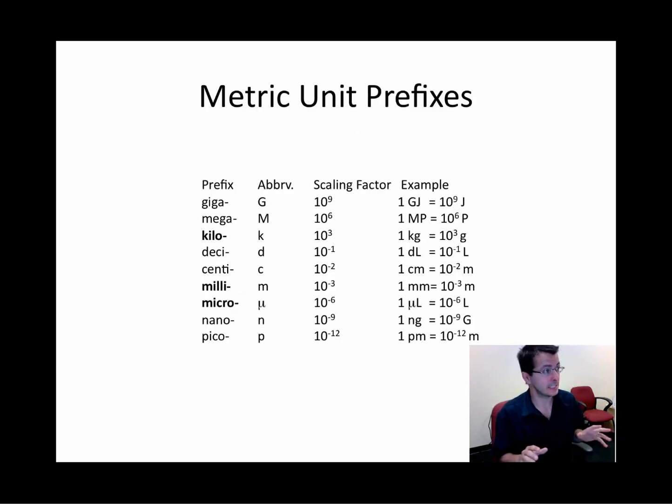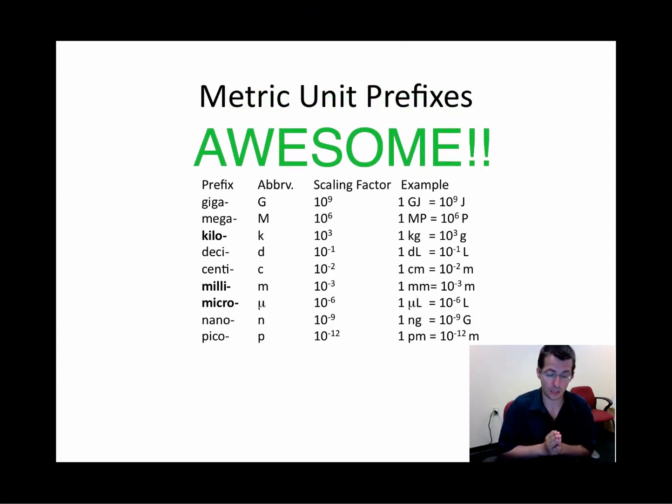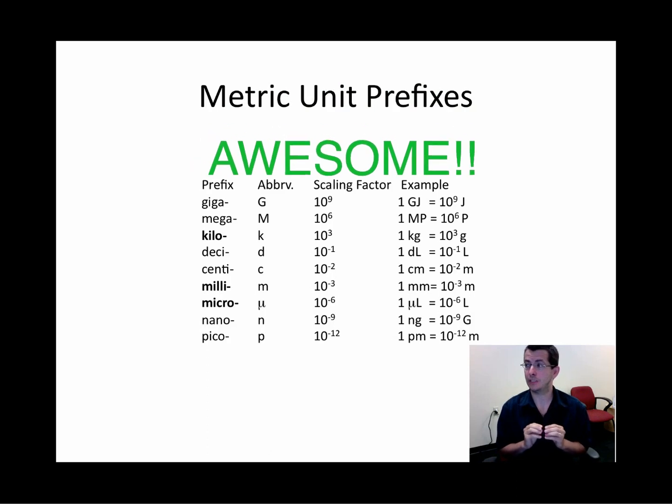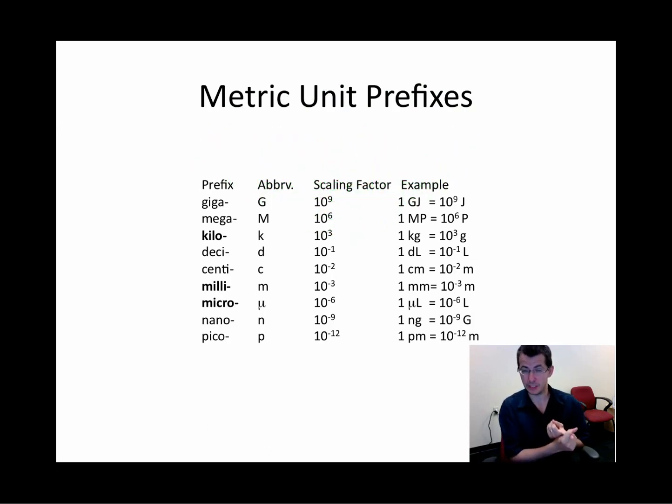Lastly, the last thing you should be memorizing are the metric prefixes. Now the metric system is awesome. It's awesome because it allows us to give a feel for not just what is being measured, but how much is being measured, the relative scale. And these relative scales are denoted by the prefix. And these are the common prefixes that you will be asked to memorize. For the nursing chemistry class, probably the ones in bold are the only ones you really need to worry about. Kilo, milli, and micro. These are the common ones, the most bang for your buck.